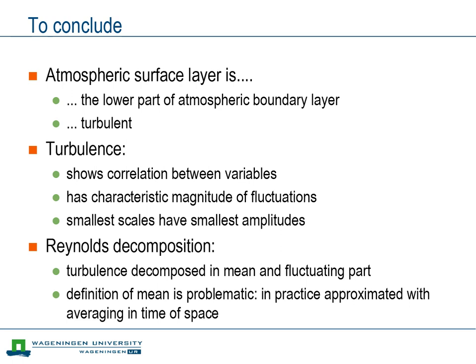To summarize, we have seen that the lower part of the atmospheric boundary layer is a turbulent layer. Turbulence can be characterized in a number of ways: some variables are mutually correlated, and turbulent fluctuations have typical magnitudes and time scales. Finally, we have introduced Reynolds decomposition as a means to separate turbulent fluctuations from the mean conditions. However, the definition of the mean proved to be somewhat problematic.